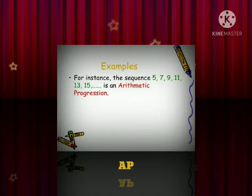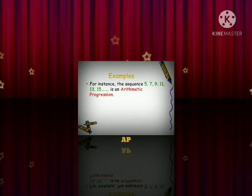You can see the example 5, 7, 9, 11, etc. is an AP because the difference between 5 and 7, 7 and 9, 9 and 11 is 2 only.